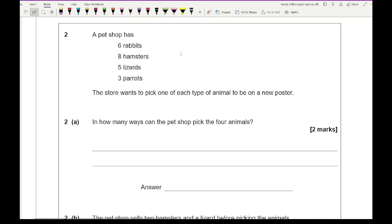Moving on to question 2, it says the pet shop has 6 rabbits, 8 hamsters, 5 lizards and 3 parrots. The store wants to pick 1 of each type of animal to be on a new poster. In how many different ways can the pet shop pick the 4 animals? So again, going for the number of quantity we've got of each particular category, we've got 6 times 8 times 5 times 3, and we get an answer for that of 720. So loads of options for that pet shop.